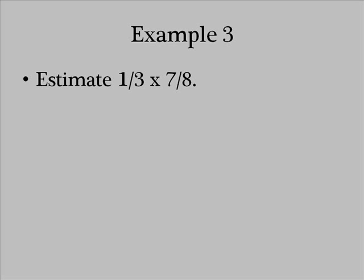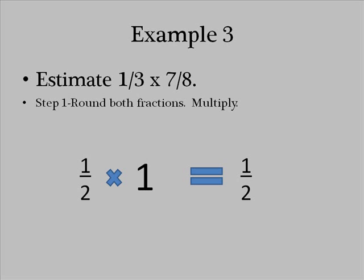Now let's try one with rounding. Estimate 1 third times 7 eighths. In this case, I'm going to reflect upon a skill I've used before which is rounding. 1 third is close to 1 half and 7 eighths is close to 1.